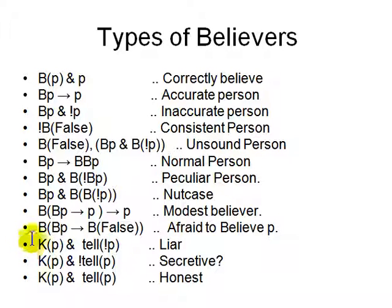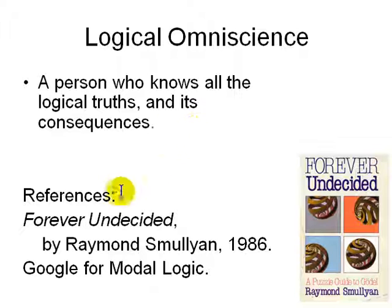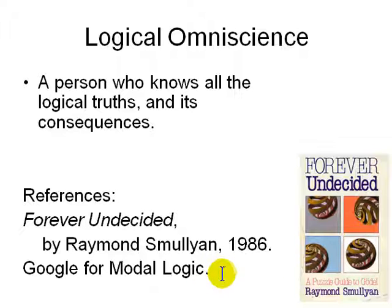It's really useful to be able to write in logical format all the different kinds of beliefs. So what does logical omniscience mean? Usually a person who knows all the logical truths and their consequences. Usually God is considered to be logically omniscient — God knows everything, all future and past. A reference for this is the book by Raymond Smullyan, 1986. You can search for modal logic to find out more, as belief, knowledge, and time are modalities of logic. It's a really nice book for learning about beliefs, logic of knowledge and belief. Thank you.